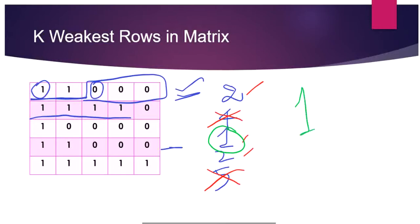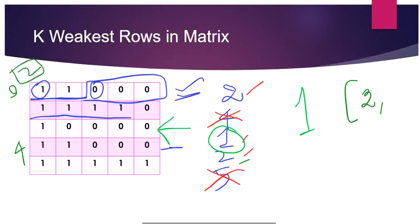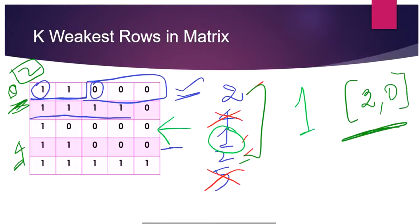First we identify that one soldier is the weakest count, and that belongs to row index 2, so we add 2 first. Now we're left with the 0th row and 3rd row, both having two soldiers. We choose the 0th row because both have the same soldiers but row 0 is in front, making it weaker. So we add 0 to the list and return the output.